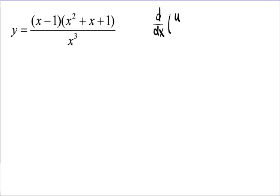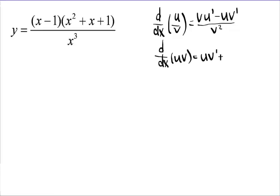of u over v, then we're going to have low d high minus high d low over low low, or low squared. And the other thing that we have to keep in mind is that we're going to look at the derivative of a product. So this is going to end up being u times v prime plus u prime times v.